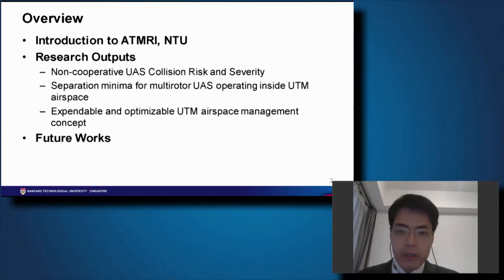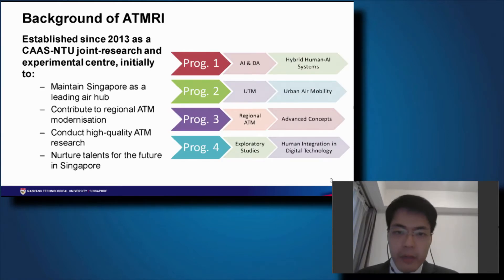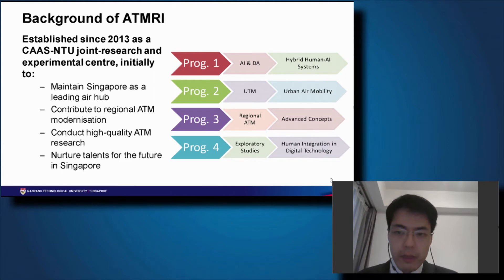For this presentation, I will give a brief overview of ATMRI under NTU, go through our research output over the past few years, and touch on future work. ATMRI was established in 2013 as a joint CAAS and NTU research and experimental center. We are split into four programs: Program One is AI for air traffic management, Program Two is UTM, Program Three is regional ATM, and Program Four is exploratory studies.